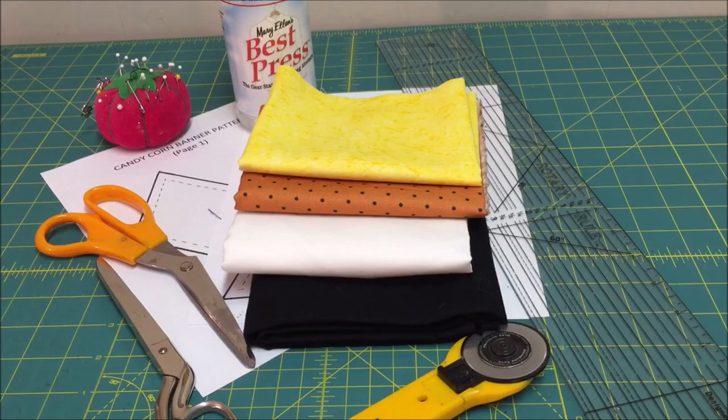To make the candy corn banner you will need the candy corn pattern sheets page 1 and 2, candy corn fabric yellow, orange and white, fabric for the back of the candy corn piece, black double fold extra wide bias tape or you can make your own tape and I will show you how, rotary cutter, ruler and mat, Best Press, sewing machine, iron and ironing board, scissors and basic sewing supplies.